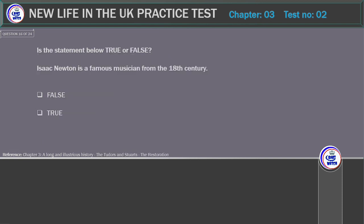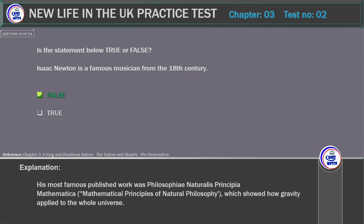Is the statement below true or false? Isaac Newton is a famous musician from the 18th century. Correct answer: False. Explanation: His most famous published work was Philosophiae Naturalis Principia Mathematica — mathematical principles of natural philosophy — which showed how gravity applied to the whole universe.